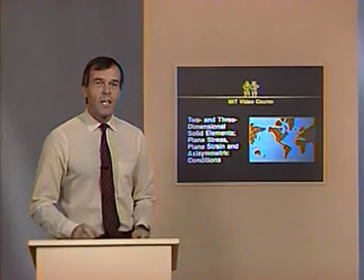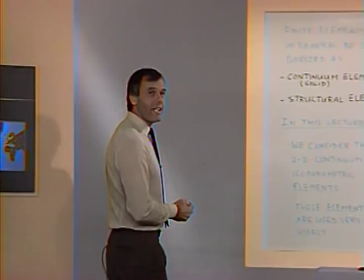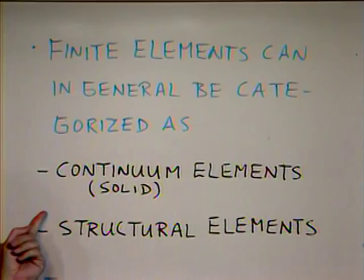Finite element matrices can generally be categorized as continuum elements, sometimes also called solid elements. The truss element, for example, would be a continuum element. The 2D and 3D elements would also be continuum elements. As another category, we have structural elements: beam elements, plate elements, and shell elements.